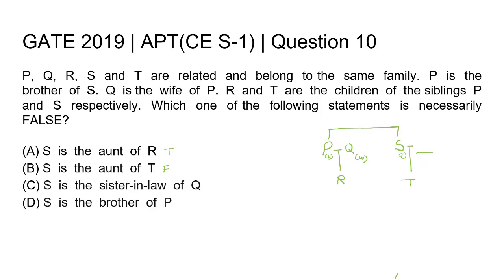But let us check the other options as well. Option C is: S is the sister-in-law of Q. Since Q is the wife of P and S is the sibling of P, S can be a sister-in-law of Q, so this statement can also be true. Option D is: S is the brother of P. As given in the question, P is the brother of S, so S can also be a brother of P — this option can also be true.